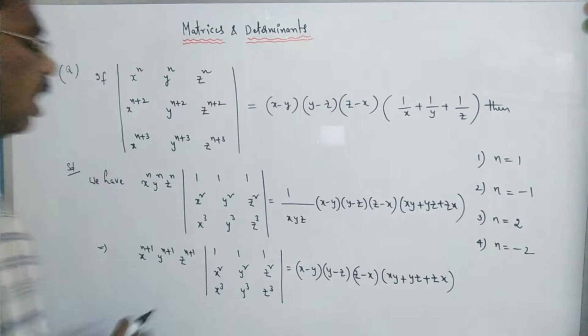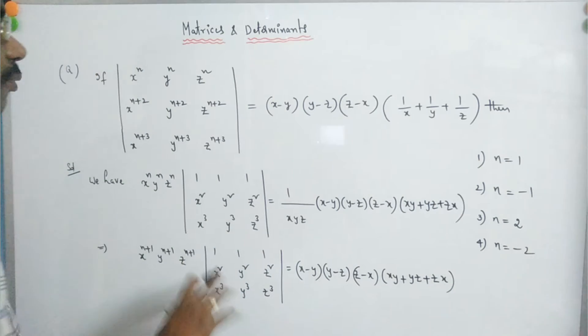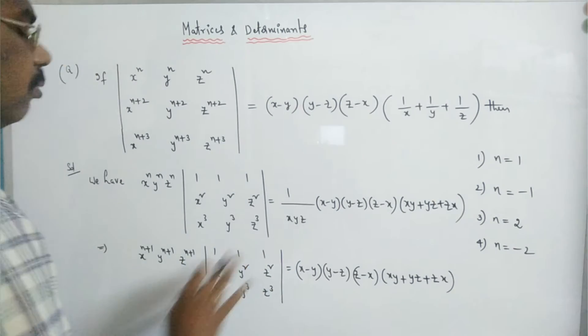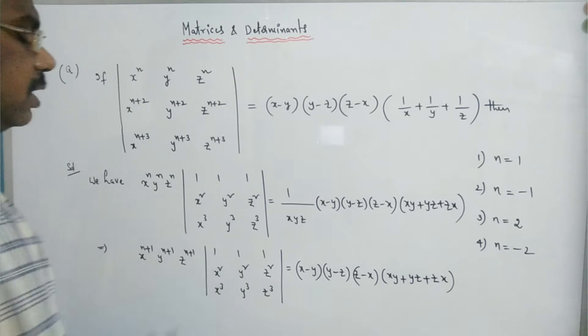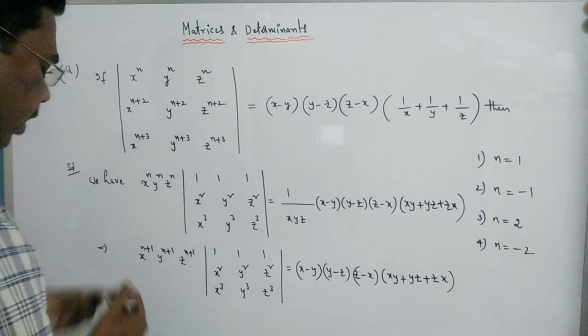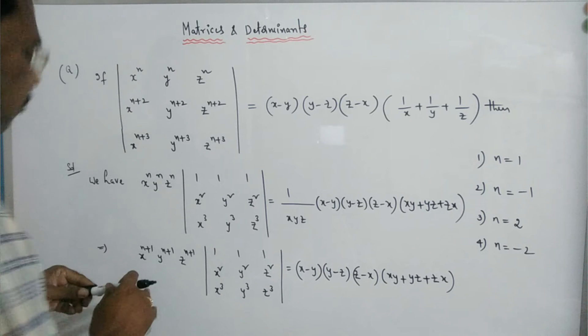Now, the degree of the determinant of 1, 1, 1; x², y², z²; x³, y³, z³ is 5.